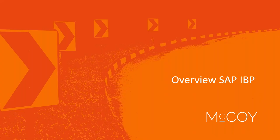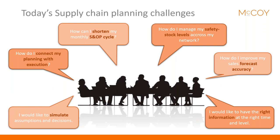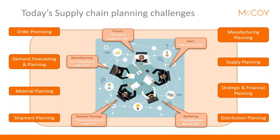In today's supply chain there are many planning challenges. Planners face the need to simulate assumptions in order to take the best decisions, connect planning with execution, shorten their monthly S&OP cycle, manage safety stock levels across the entire network, and have the right information at the right time. In a company there are many different departments — sales, finance, manufacturing — and they all need to be aligned, which is really difficult without the right process or system.